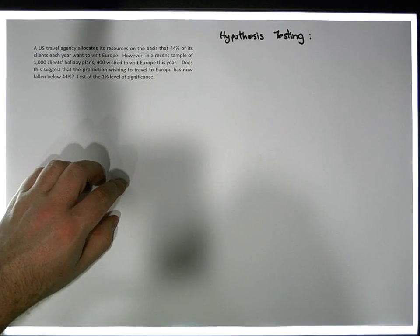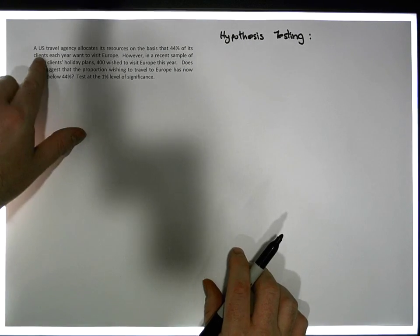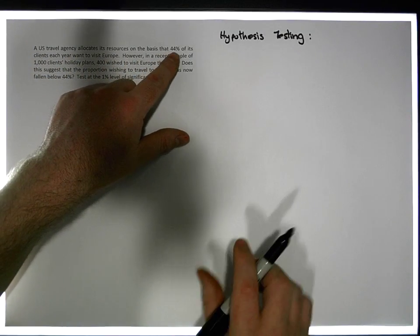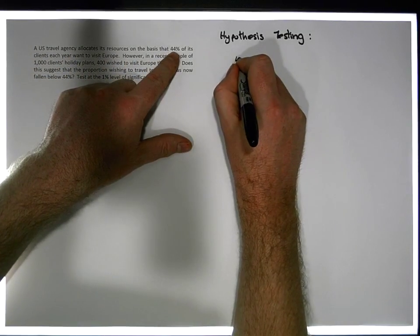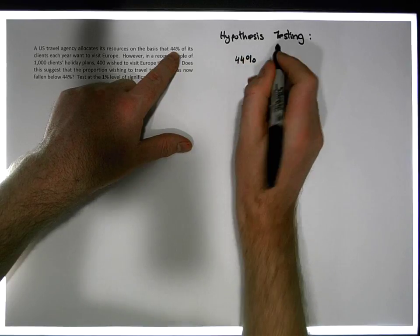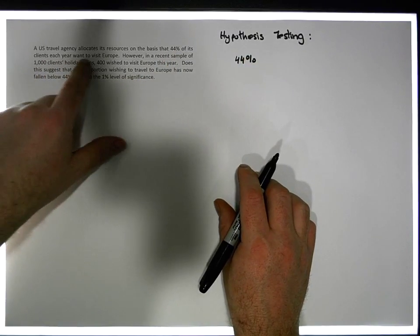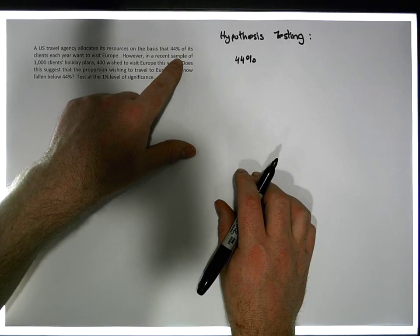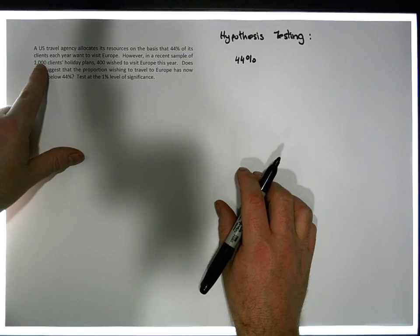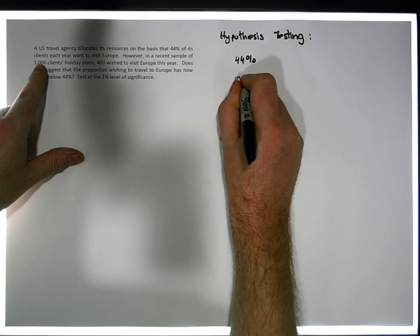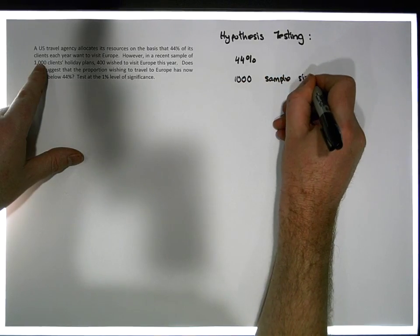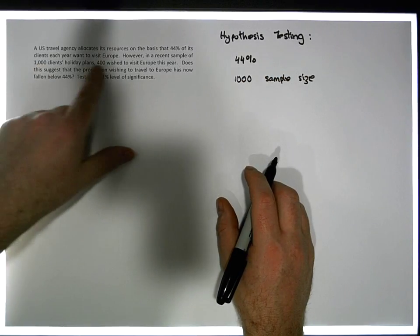So what I said previously was, let's walk through the question again and extract out all the numbers. We have a US travel agency that allocates its resources on the basis that 44%, so there's a number. However, in a recent sample, this is sample information, in a recent sample of 1,000 clients, so that number there, 1,000, is my sample size.